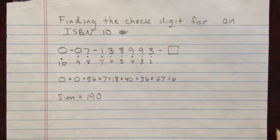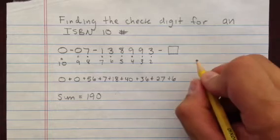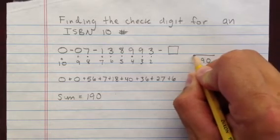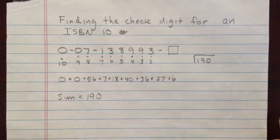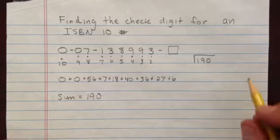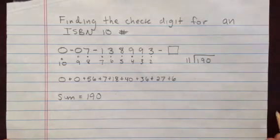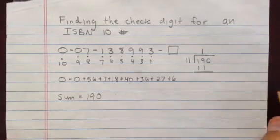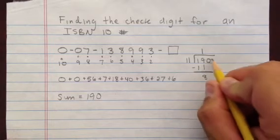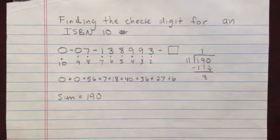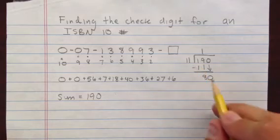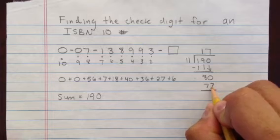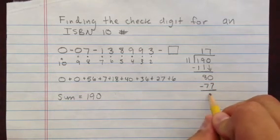Then from there we have to do some long division. Take the 190 and divide it by 11 — remember, this is a modulus 11 system, and the ISBN 10 number is divisible by 11. So take that and divide by 11. 11 goes into 19 one time, that's 11. Subtract: 9 minus 1 is 8. Bring down the 0 — that gives us 80. 11 goes into 80 seven times, that's 77. Subtract and get 3.